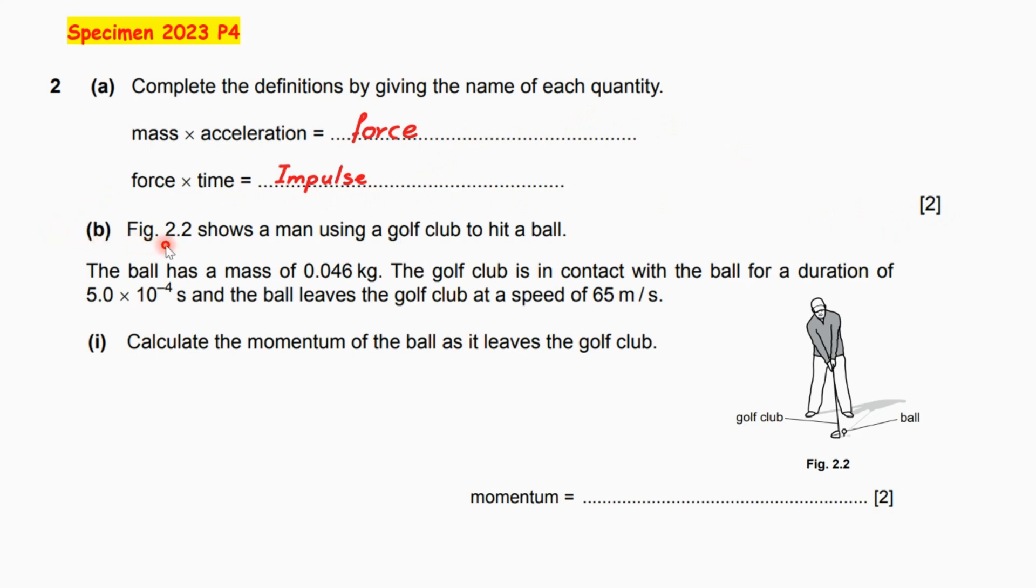Section B, figure 2.2 shows a man using a golf club to hit a ball. The ball has a mass of 0.046 kilogram. The golf club is in contact with the ball for a duration of 5.0 times 10 to the negative 4 seconds, and the ball leaves the golf club at a speed of 65 meters per second.